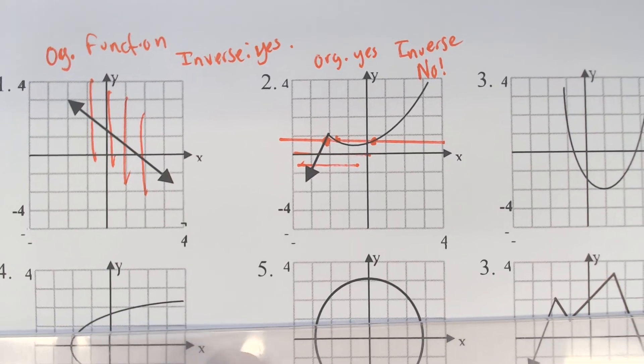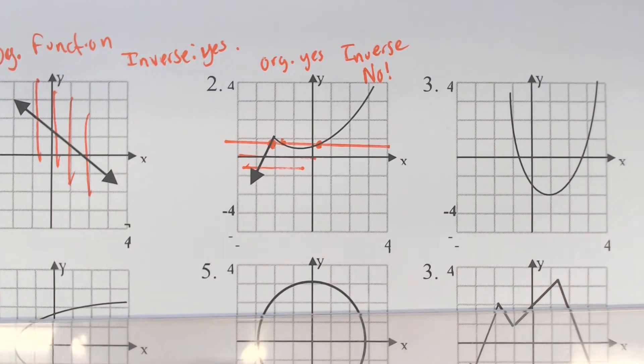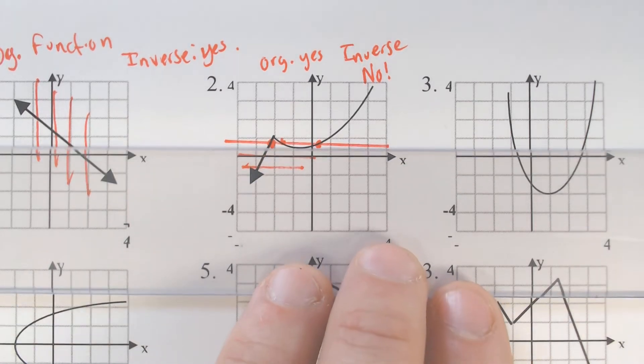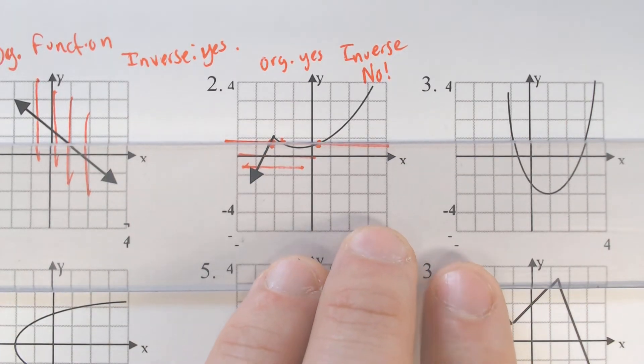So just because the original is a function doesn't mean the inverse will be, because the inverse is switching your x and y's, which is why we're doing the horizontal line test.